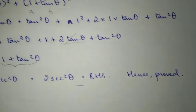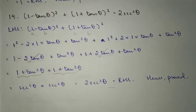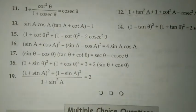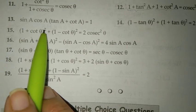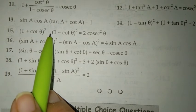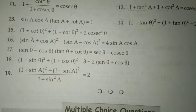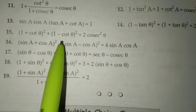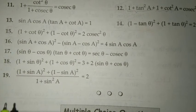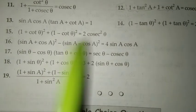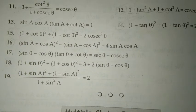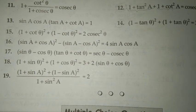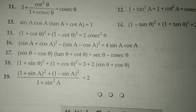Now question 15 follows the same approach: expand using (a plus b) whole square and (a minus b) whole square, the opposite signs will cancel, and you'll be left with 2 sec square. Please try question 15 on your own. Bye!